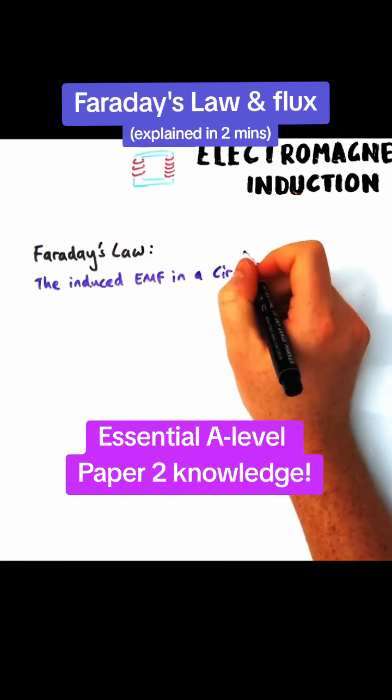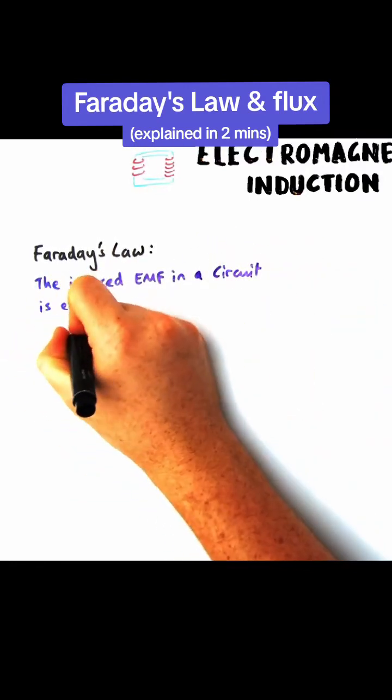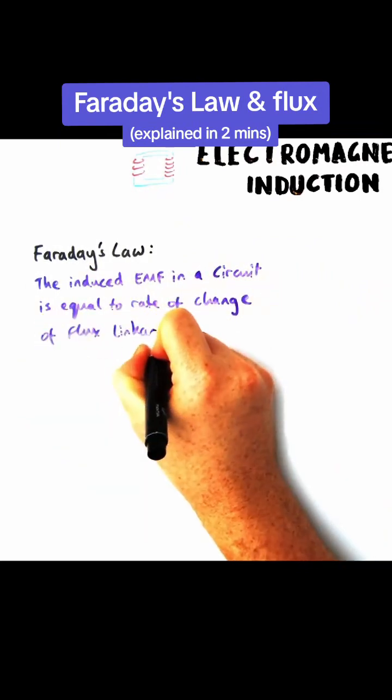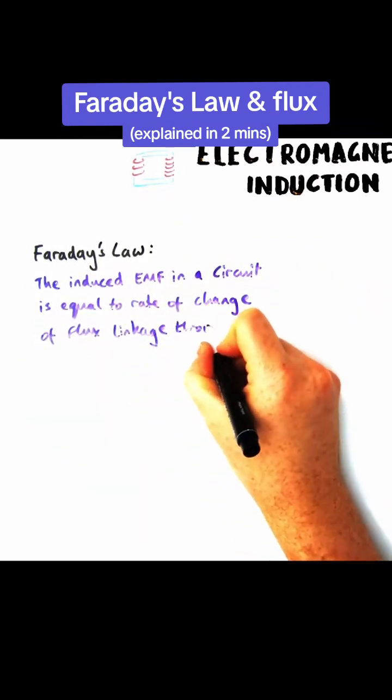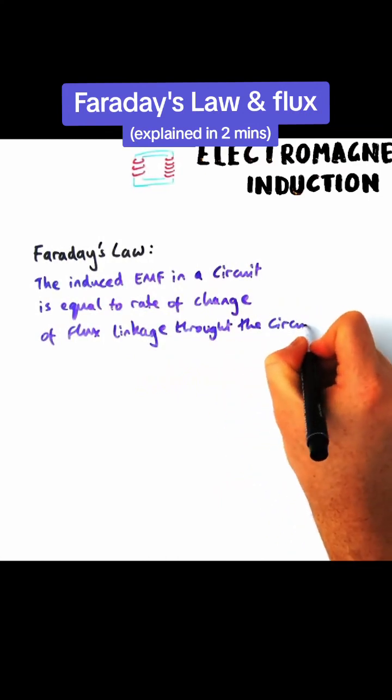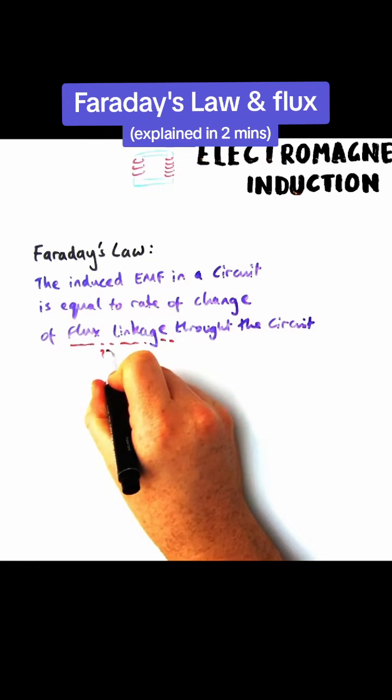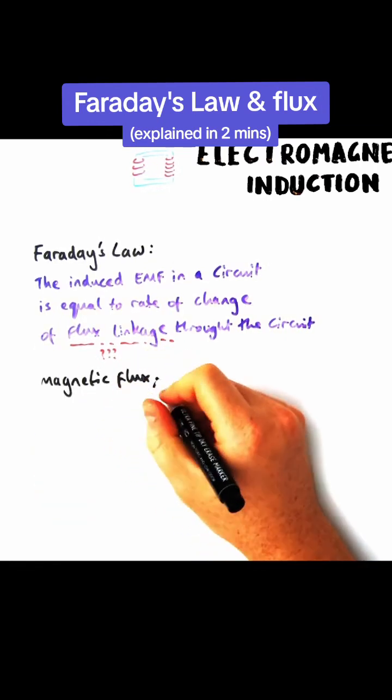So Faraday's law says that the induced EMF in a circuit is equal to the rate of change of flux linkage throughout the circuit. Now the one phrase you won't recognize unless you've studied this intensely is what flux linkage is, magnetic flux linkage. So let me define magnetic flux first and we'll look at what flux linkage is.